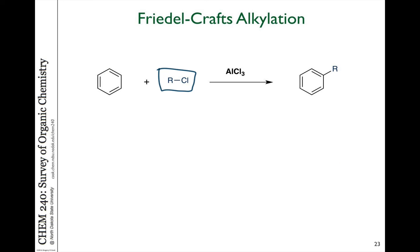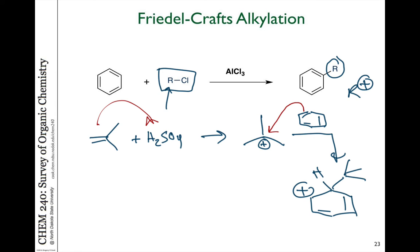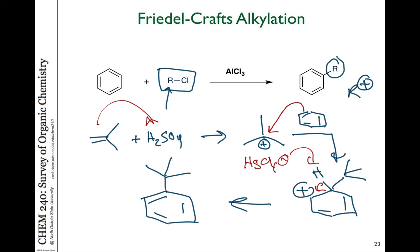We can add carbon groups as well. R stands for any alkyl group, and what we need is a carbocation to react with. We've seen ways to generate carbocations — for example, if you take 2-methylpropene and react it with H2SO4, you generate an intermediate tertiary carbocation. That reacts with benzene to generate a carbocation intermediate, which then undergoes loss of hydrogen to regenerate the product that's been alkylated — in this case a tert-butyl group. In this Friedel-Crafts alkylation, all the details about carbocation generation and stability come into play.